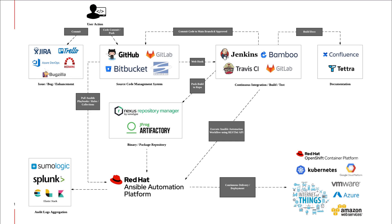In this diagram, the developer will pick up an issue, bug, or enhancement from platforms such as Jira or Azure DevOps and work on it. They will perform a code commit into the Git repository such as GitHub or GitLab. When that happens, it will trigger off a webhook towards CI tools such as Jenkins to start the CI process. This will in turn lead to the build being pushed to a package or binary repository such as Nexus or JFrog Artifactory.